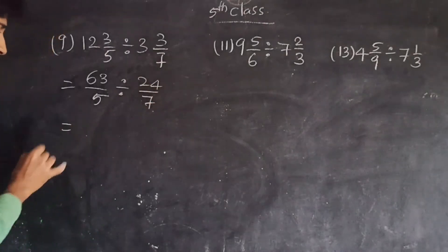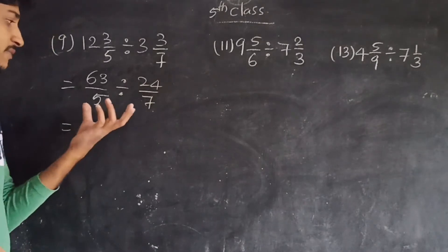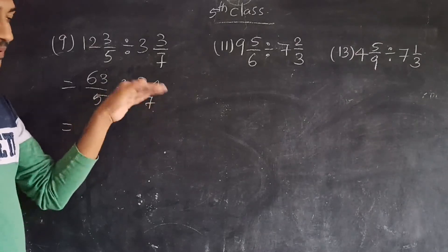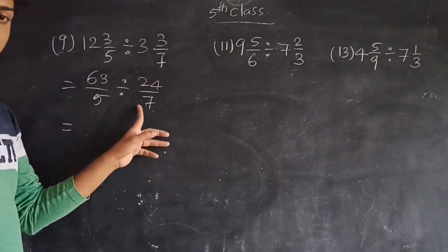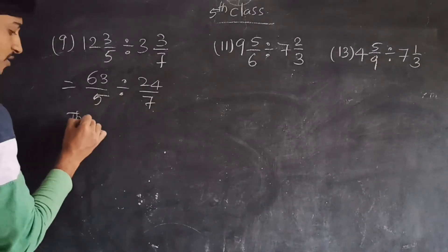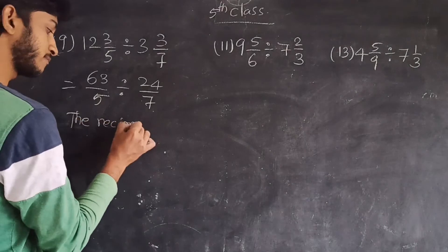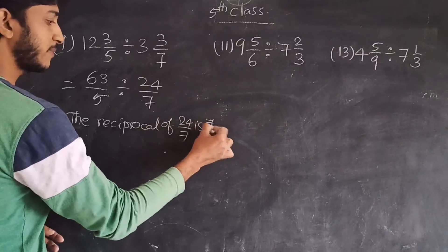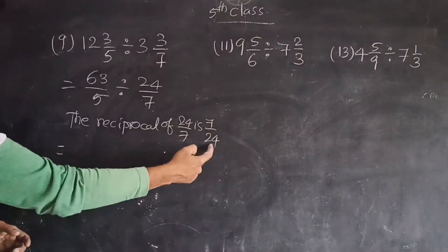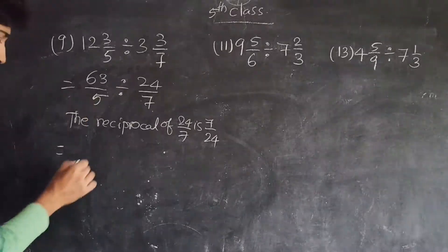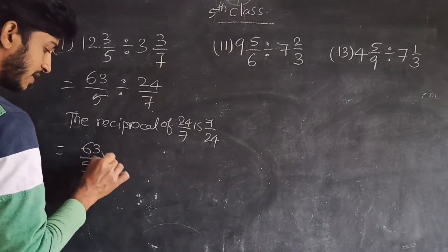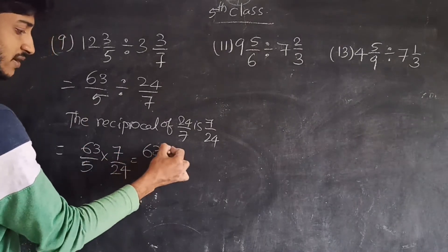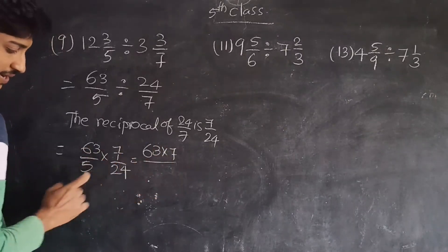Okay, so you have two fractions to divide. Division, so we convert the second fraction into its reciprocal. The reciprocal of 24 by 7 is 7 by 24. Okay, now the problem is 63 by 5 multiplied by 7 by 24.